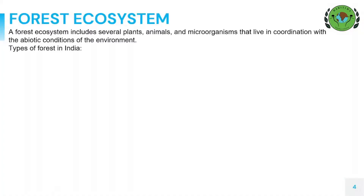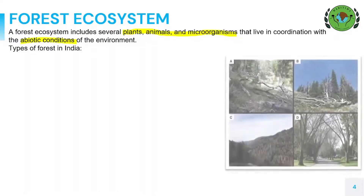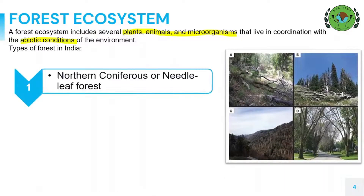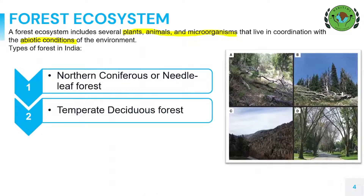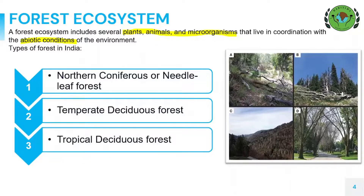Beginning with forest ecosystem, we know that a forest consists of a plant community predominantly determined by trees, shrubs, vines and soil cover. However, the scope of forest ecosystem is a bit wider — it includes several plants, animals and microorganisms that live in coordination with the abiotic conditions of the environment. Some types of forests found in India are northern conifers or needle-leaf forest, temperate deciduous forests and tropical deciduous forests.